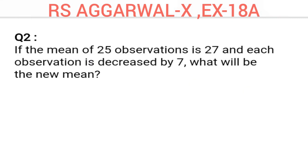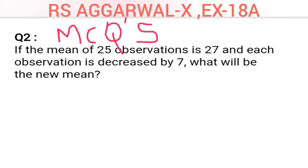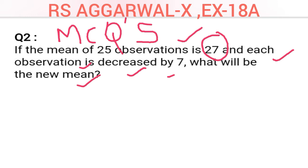One more question — this is important for MCQs in your board exam. You have 25 observations and their mean is 27. If each observation is decreased by 7, what will the new mean be? You have to calculate the new mean.